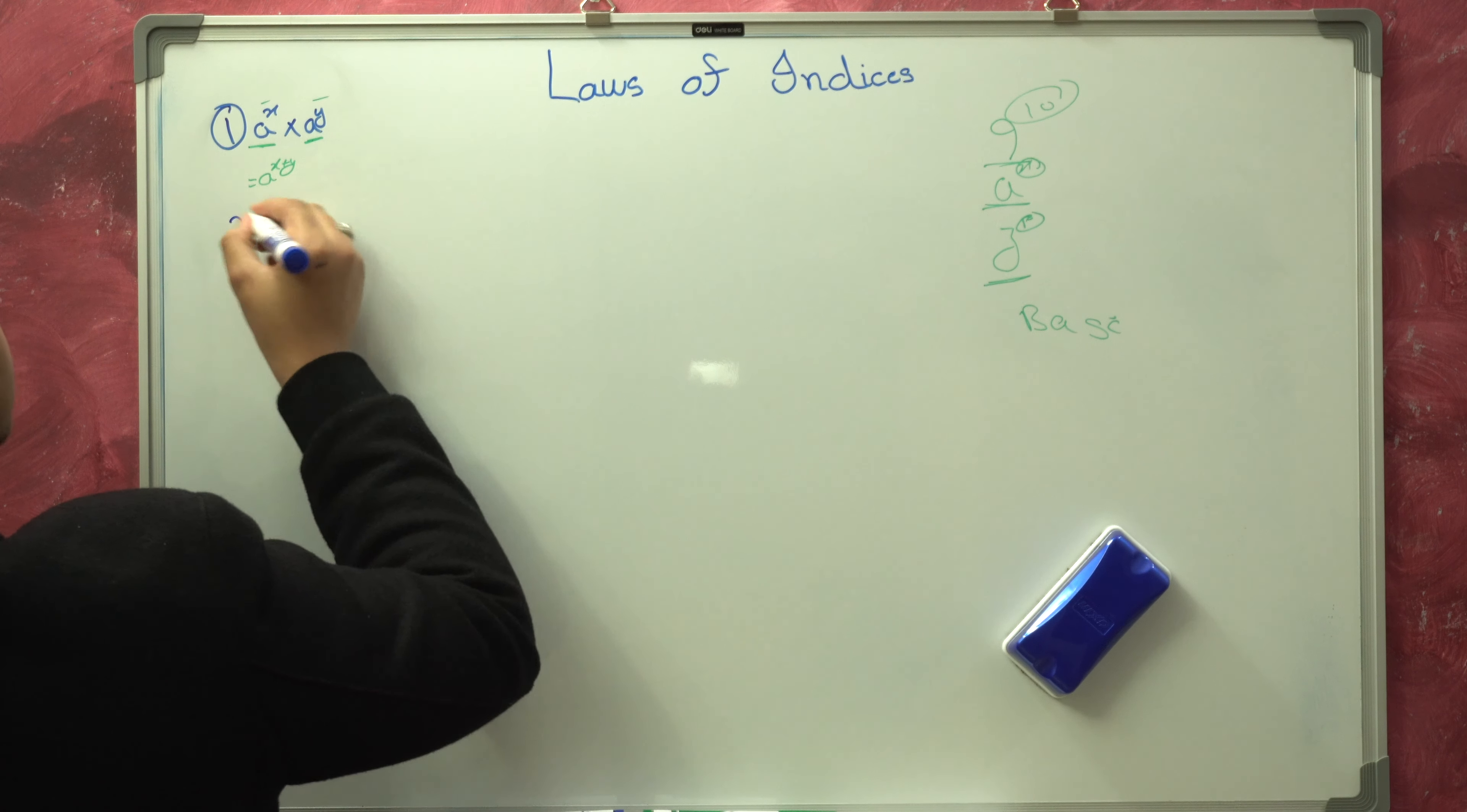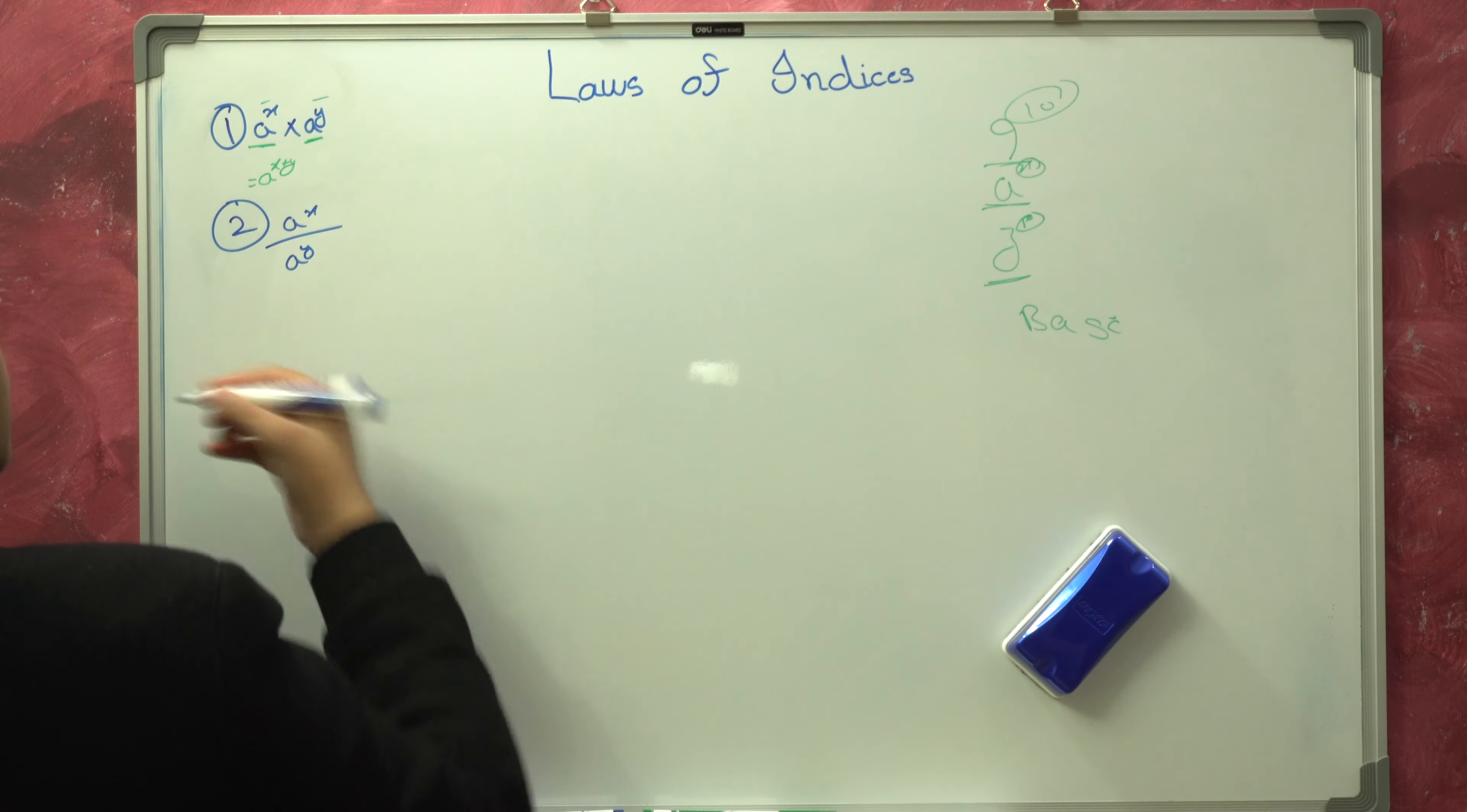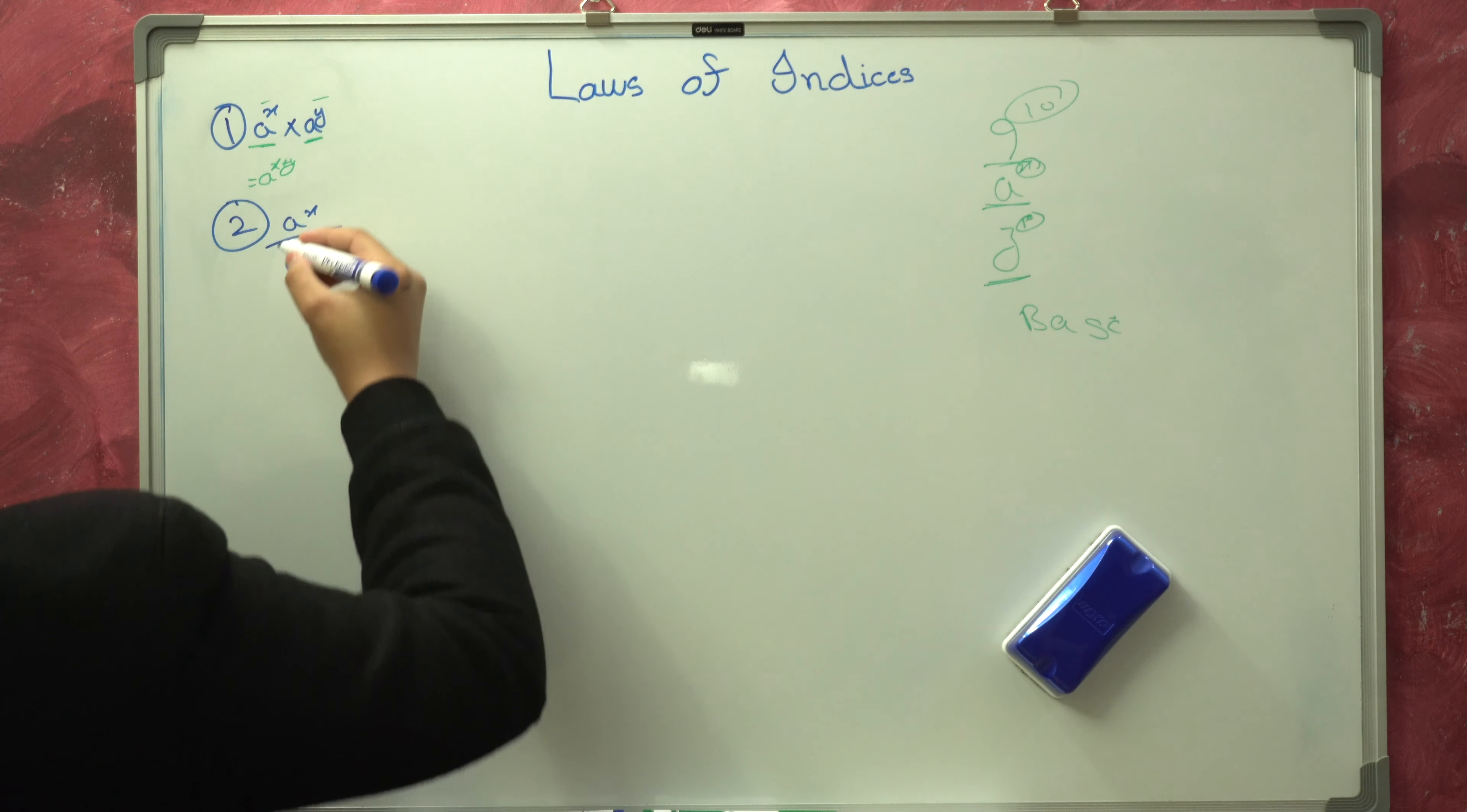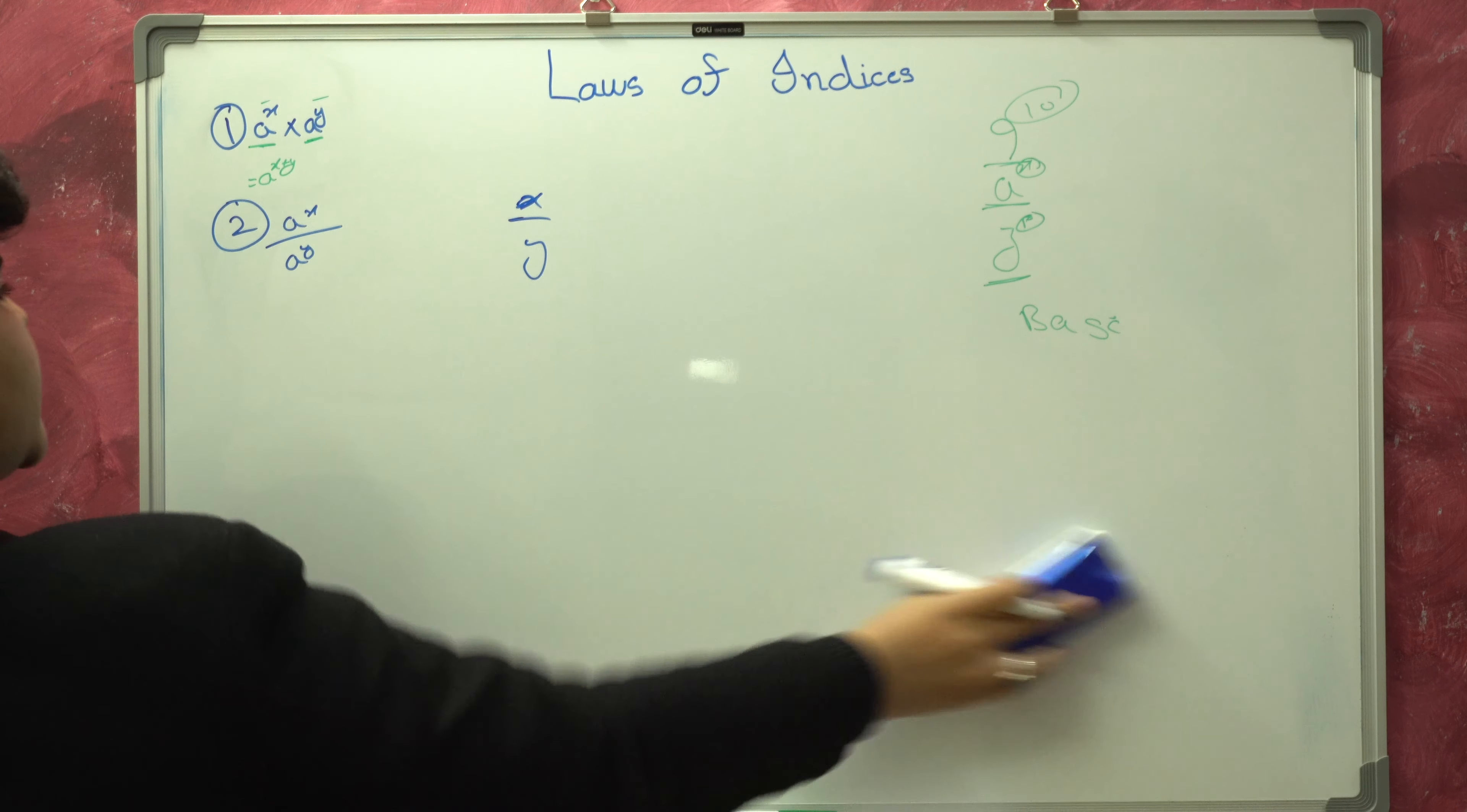Now moving on to the second law. The second law is, for example, A to the X over A to the Y. This is the second law. In the second law, it says that if there are two same bases in a fraction, in the form of fraction X over Y, this is the fraction form.